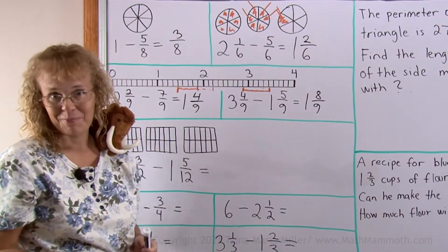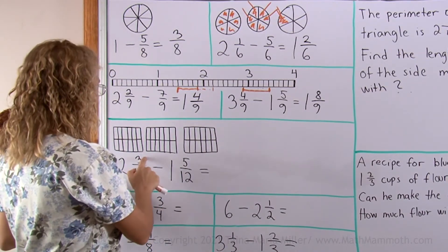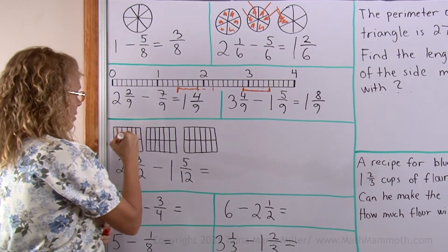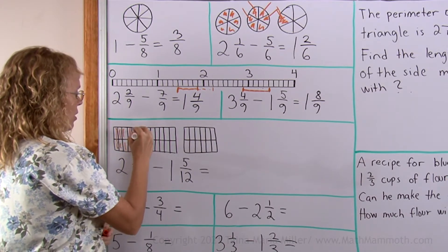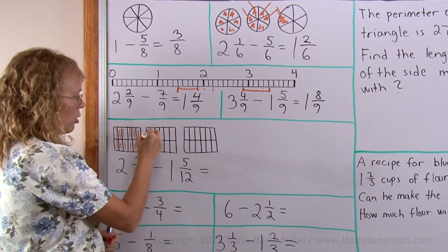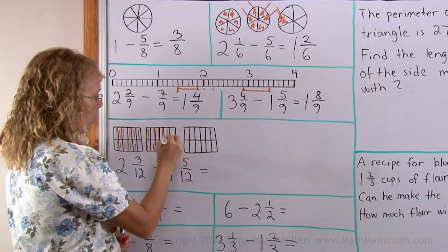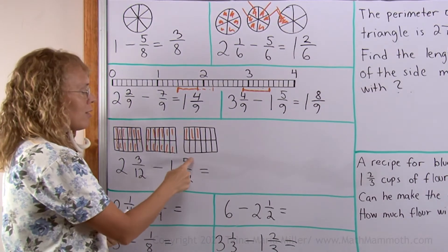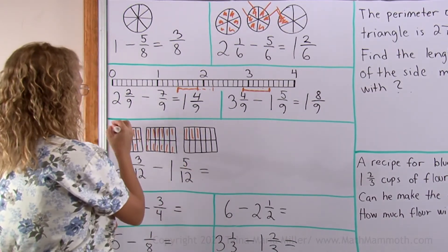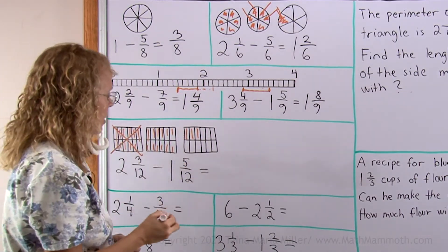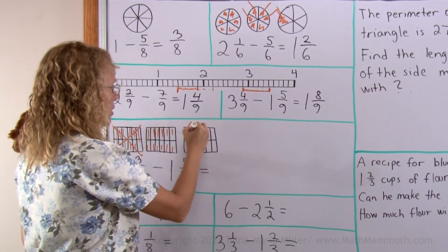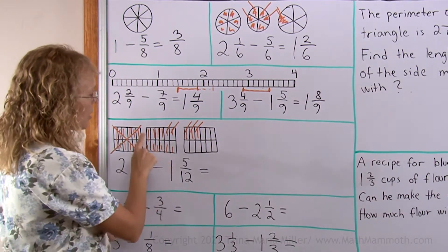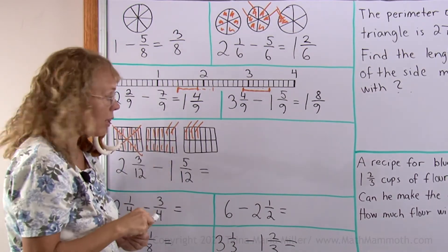Yet one more with a visual model: 2 and 3 twelfths minus 1 and 5 twelfths. You can simply colour in to start with this much — 2 and 3 twelfths, those are all coloured. Now you take away 1 and 5 twelfths. If you take away 1, you take away this whole thing, and then 5 twelfths — this and this and this and this and this. So what is left over here is just 10 twelfths.